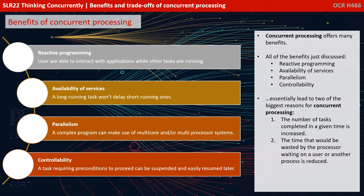All of the benefits just discussed essentially lead to two of the biggest reasons for concurrent processing. Firstly, the number of tasks completed in a given time is effectively increased, and the time that would be wasted by the processor waiting, for example, on the user or another process, is reduced.